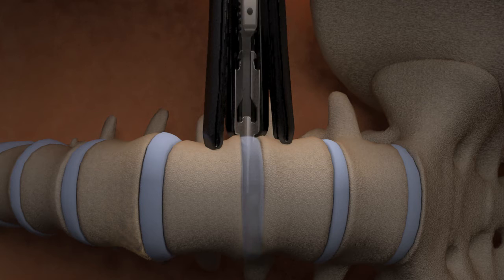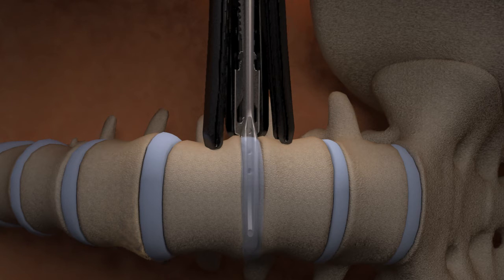Increase in height until the appropriate trial is reached. Use caution not to over-distract the disc space. Determine the correct implant length by selecting the sizing window that best aligns with the proximal edge of the vertebral body.